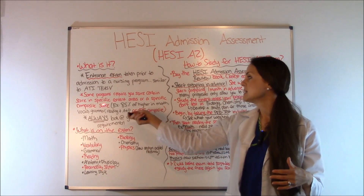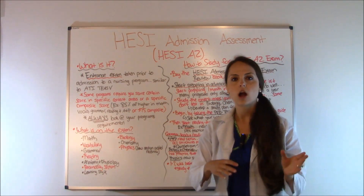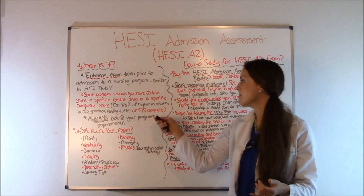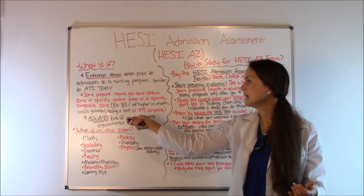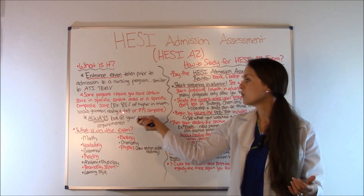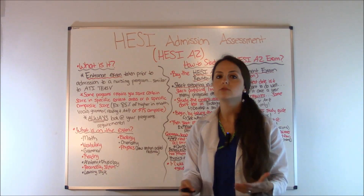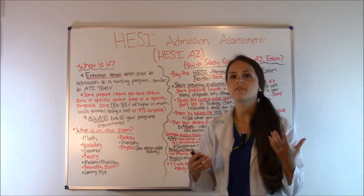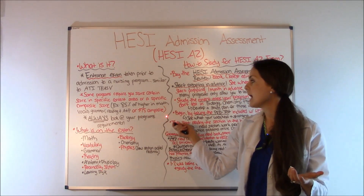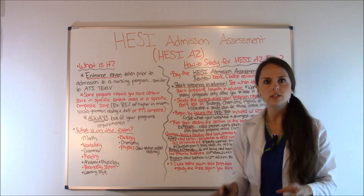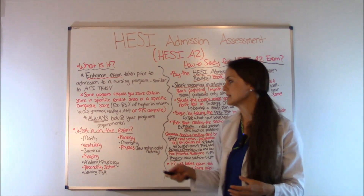For instance, some programs may want you to score at least 85% or higher in math, vocabulary, reading, grammar, or anatomy and physiology, while others may want you to score at least 75% or higher as your composite score. So always check with your program's requirements.